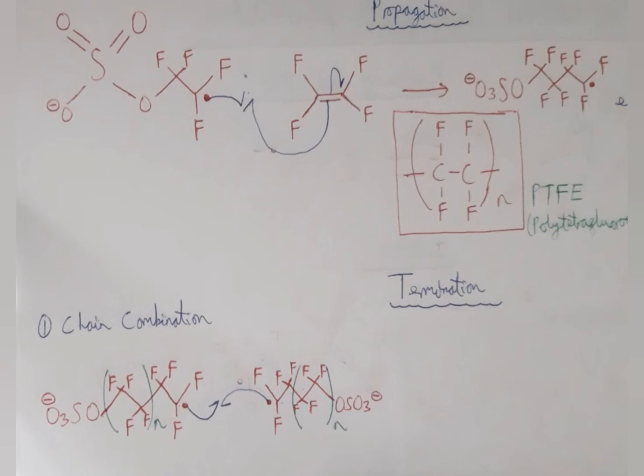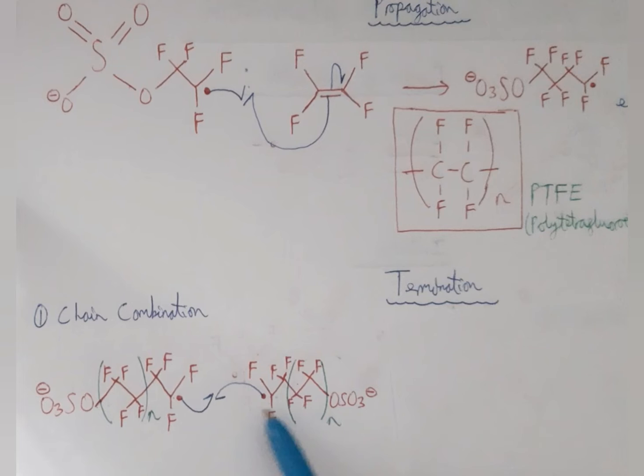In disproportionation, basically what happens is if we had a proton here, it would get deprotonated by this radical. That would form the alkene, and then this radical would gain a proton, and that would just form the alkane.